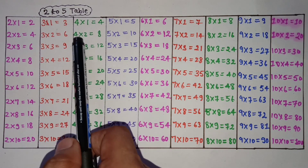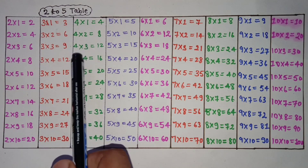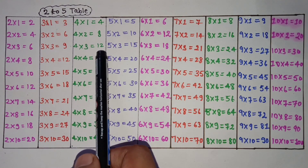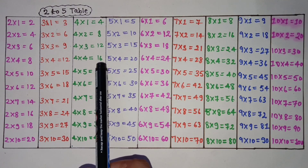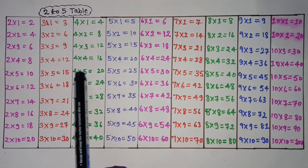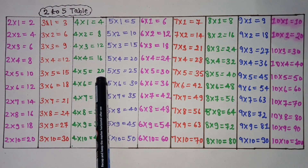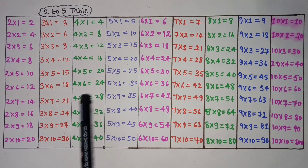4 2 is 8, 4 3 is 12, 4 4 is 16, 4 5 is 20, 4 6 is 24.